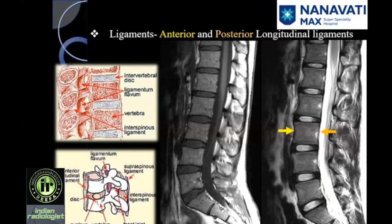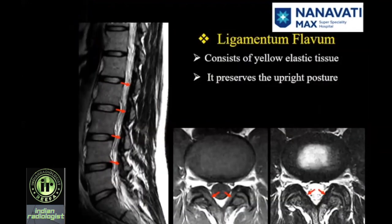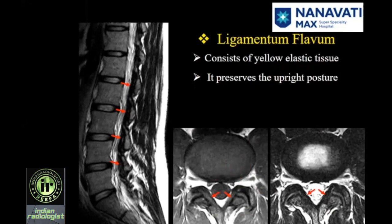A little bit about ligamentum flavum. It holds the facet joints together and goes across the superior and inferior articular facets. It consists of yellow elastic tissue and preserves the upright posture of the human being. When you are getting up from a bent position and trying to become erect, the ligamentum flavum comes into picture. It starts degenerating with facet joints as early as the second decade of life, and at age 60 plus, virtually everybody will have facet joint arthropathy and ligamentum flavum hypertrophy or pseudohypertrophy.